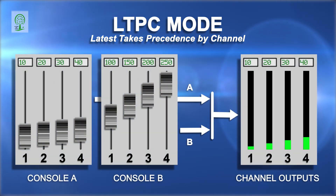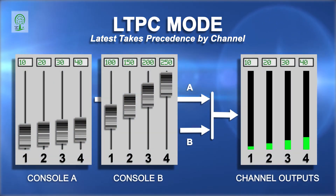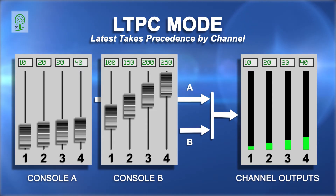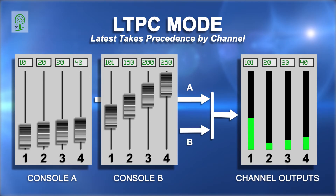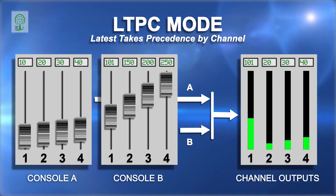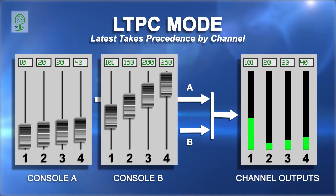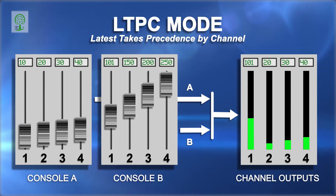For example, with the levels on both consoles as shown, and console B channel 1 changes from 100 to 101, then the merger will detect the change, and channel 1 will switch from 10 to the new B input level of 101.